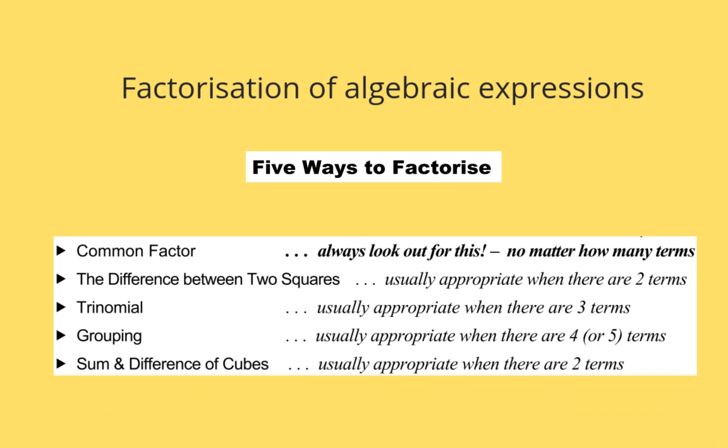It is important that you know how many terms there are in an expression, and remember terms are separated by plus and minus signs. Other types of factorization are the difference of two squares, trinomials, grouping if there are more than three terms — normally four or five terms — and the sum and difference of cubes, which are approximately two terms.